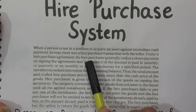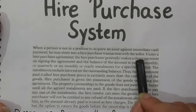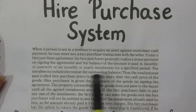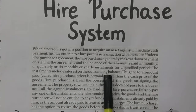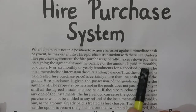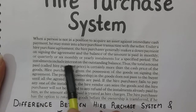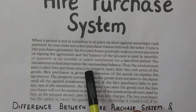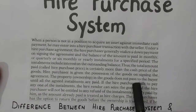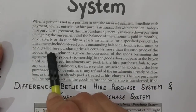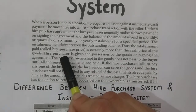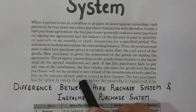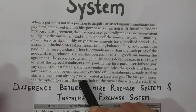In the hire purchase agreement, the buyer (hire purchaser) makes a down payment at the time of signing — in my example that was 5,000 rupees — and the balance is paid in installments, which in my example were over 5 months. The installment includes interest on the outstanding balance. The total amount paid — 80,000 for the MacBook — is called the Hire Purchase Price, which is certainly more than the cash price of 75,000.